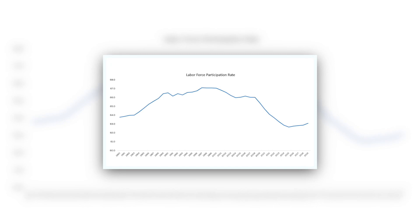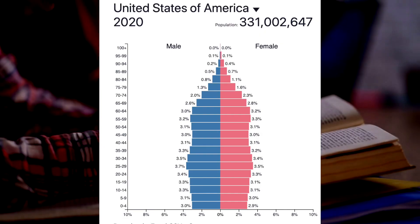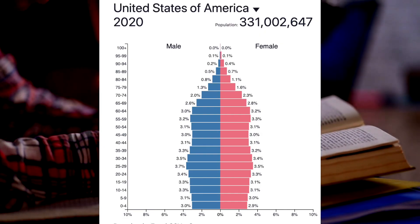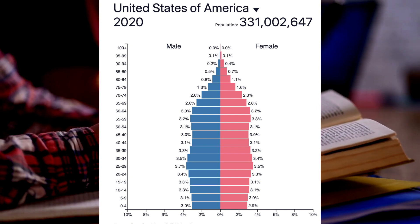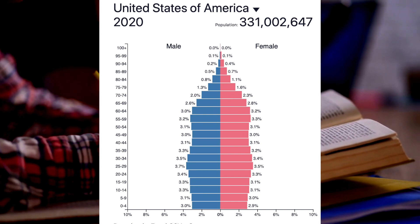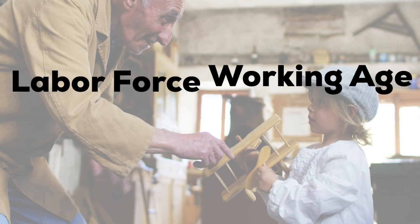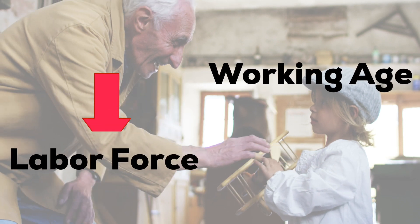During recessions, the labor force participation rate falls as more people exit the labor market and shift towards education or other activities. The labor force participation rate is also sensitive to the population pyramid. In countries where the population is aging, the labor force participation rate will be lower, as people retire and tend to exit the labor force.